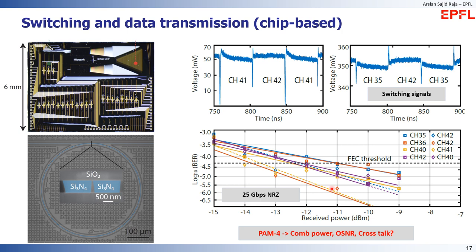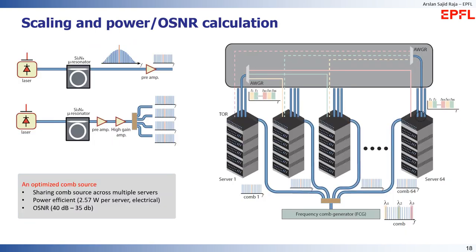We are doing further optimization to perform PAM4 data transmission using chip-scale SOAs and AWGs. Regarding power efficiency, an optimized comb source could be shared across multiple servers rather than using one comb source per server, providing the advantage of power sharing and reduced complexity. Using a split comb source, the electrical power consumed per server is around 2.57 W without degrading OSNR. After further engineering improvements, we believe a comb-based source could be an ideal candidate for optical circuit switch data centers.